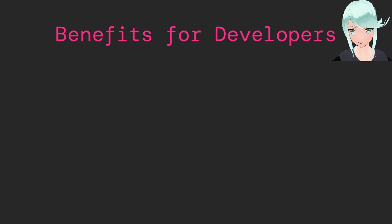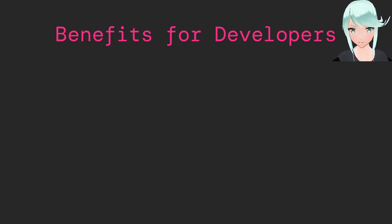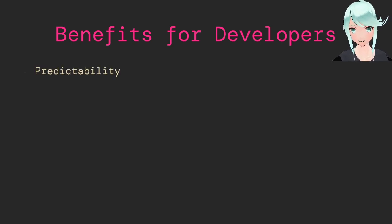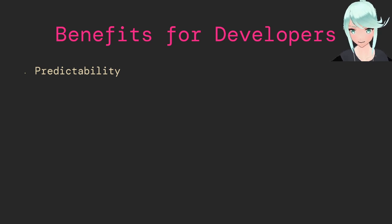There are at least four classes of benefits for Systemd, broken down into developers, packagers, system administrators, and users. For developers, people that are developing services that run on Systemd get the following benefits. Predictability: Systemd configuration files are declarative rather than imperative. You declare units instead of imperatively building up init scripts. Options are declared and enforced by the service manager, which makes it a lot easier to review changes for correctness.